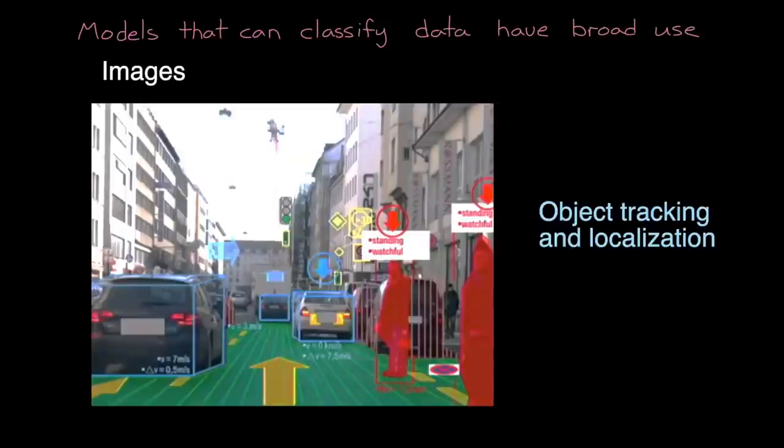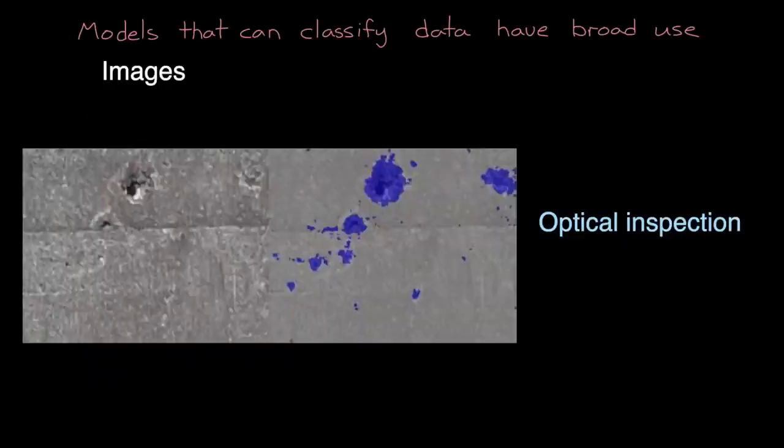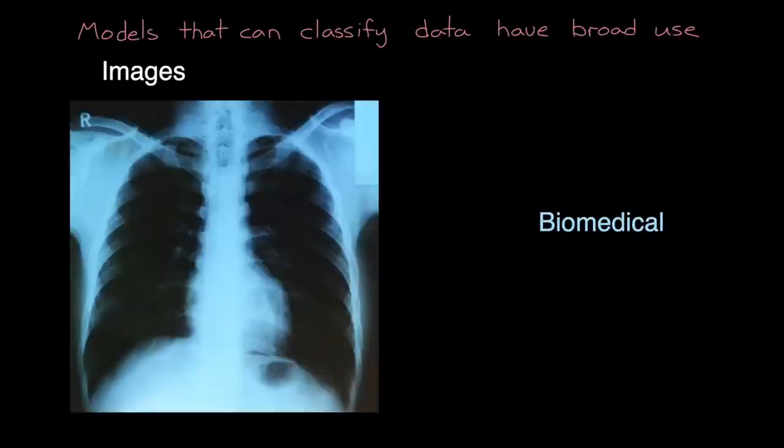For example, we may want to find and label specific objects in an image which we can use for object tracking and localization. We might want to visually inspect hardware for defects like material damage, or we may want to diagnose health issues from an x-ray or MRI image.